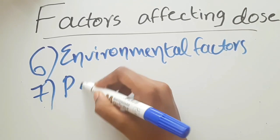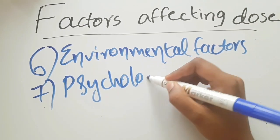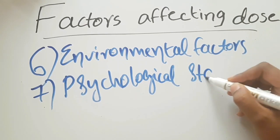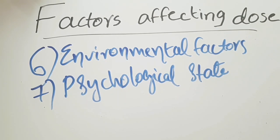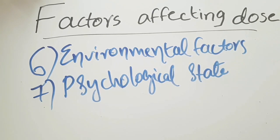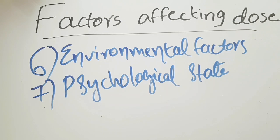The seventh one: psychological state of mind can affect the response of a drug. For example, nervous or anxious patients require more general anesthetics. Another example: placebo. This placebo is an inert substance that does not contain any drug.